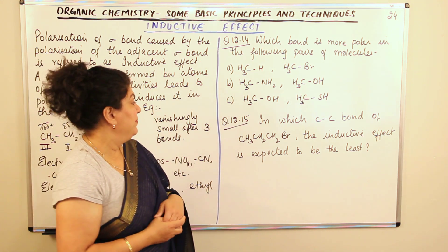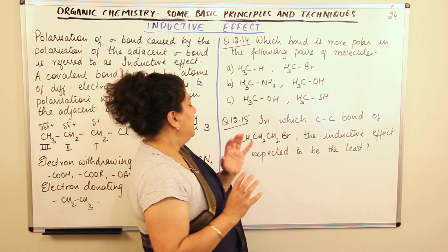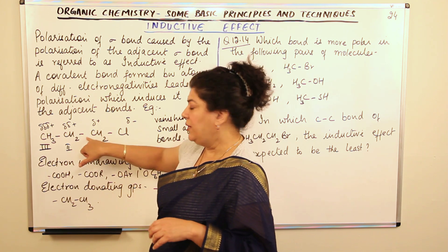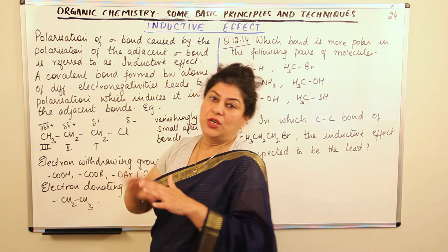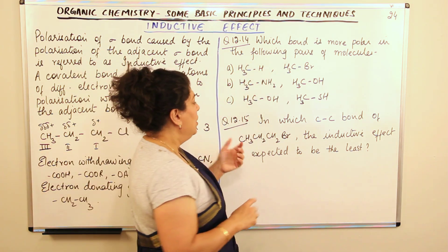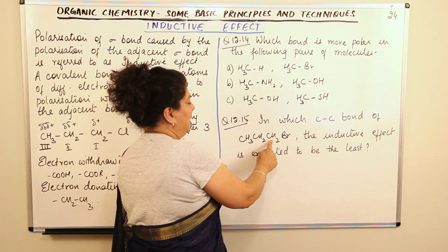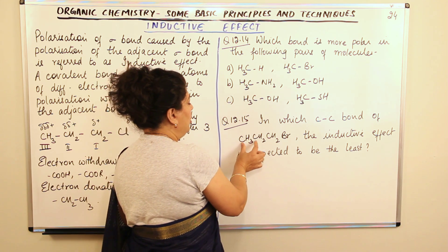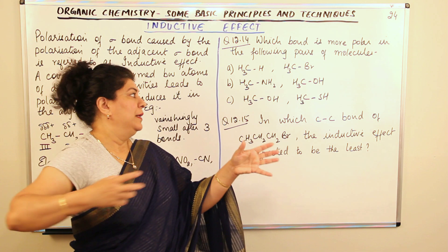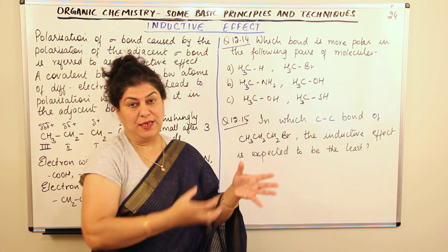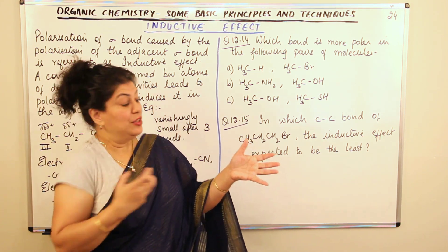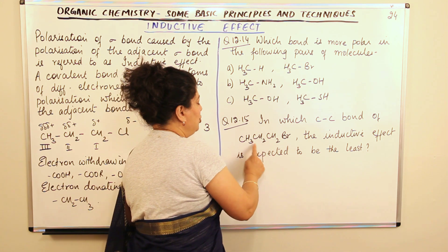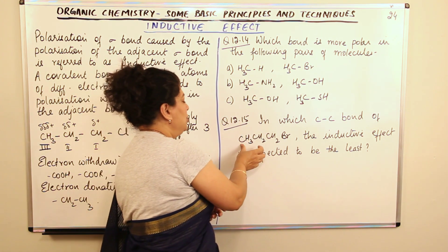Question 12.15: In which carbon–carbon bond of this molecule is the inductive effect expected to be least? The inductive effect is greatest in the bond adjacent to the electronegative atom (the first bond), and decreases along the chain. So if we have carbon-1, carbon-2, and carbon-3, the inductive effect is least between carbon-2 and carbon-3 — the further the bond is from the species causing polarity, the lesser the inductive effect.